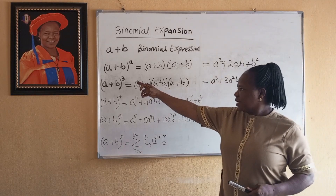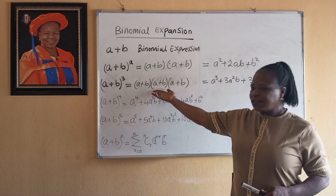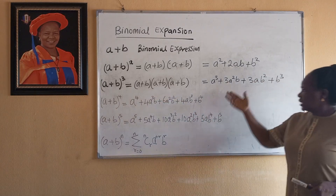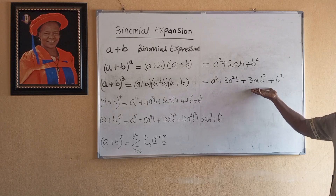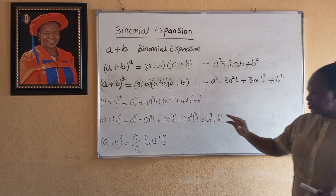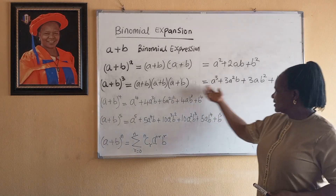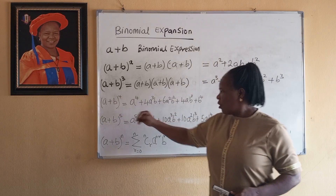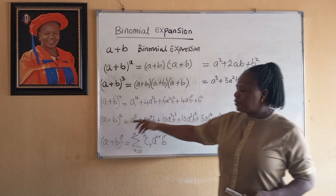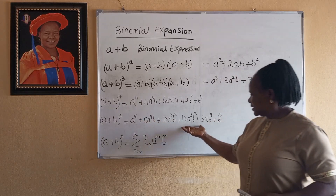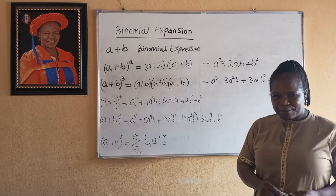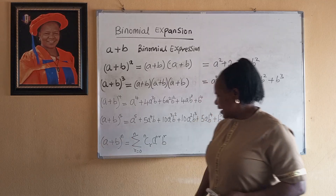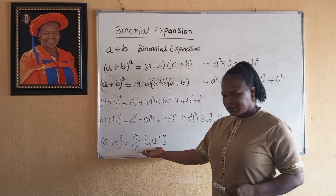If the power is 3, it is (A plus B) times (A plus B) times (A plus B). You do your normal expansion and convince yourself of the result. For A plus B raised to the power 4 we have this, raised to the power 5 we have this. And what is the pattern? This is the pattern.